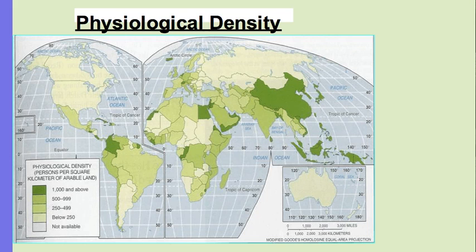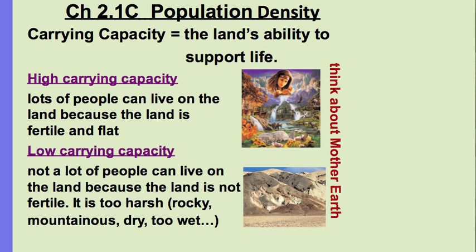Here's a choropleth map showing physiological density. Things have changed — Egypt has become much more dense because typically people just live along the Nile River, not in the desert. Carrying capacity is the land's ability to support life. Land with high carrying capacity is very fertile, flat, lush with vegetation and water, and can support lots of people. Low carrying capacity land is harsh, rocky, too dry, too wet, or too mountainous and does not support a lot of life.